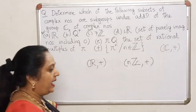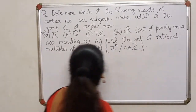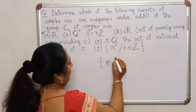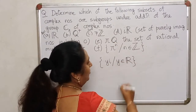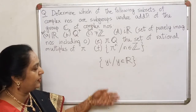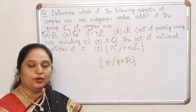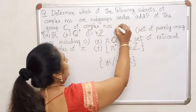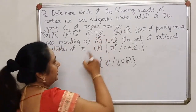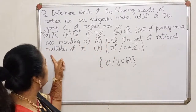Next, look at iR, the set of all purely imaginary numbers, including 0. Basically, this set contains elements like yi where y is a real number. It is definitely a subset of C. I leave it to you to show that this becomes a group with respect to addition, and therefore this too will be a subgroup. On exactly the same lines, you can prove that E, the set of all rational multiples of the irrational number π, will also be a subgroup.